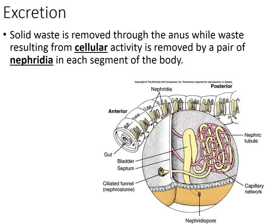For excretion, annelids move solid waste through their digestive system, and cellular wastes are removed by nephridia, which are sort of like our kidneys. They have nephridia in each of their segments, which help filter out metabolic wastes.